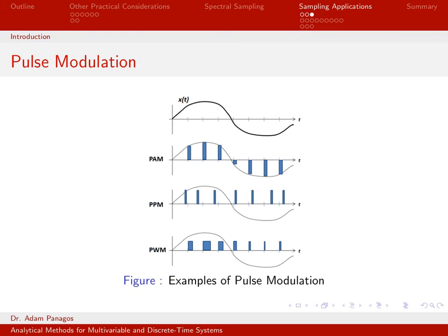Here with PAM, what I'm doing is I'm letting the amplitude of the pulse vary with the sample value. As my sample value gets larger, the amplitude of my pulses get larger. And as my samples get more negative, my pulses get more negative. So that's what PAM would look like if I encoded information using PAM.